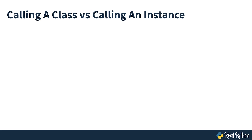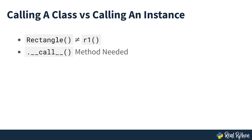A final point to note is that calling a class isn't the same as calling an instance of a class — these are two different and unrelated topics. To make a class's instance callable you need to implement a __call__ special method, which has nothing to do with Python's instantiation process.